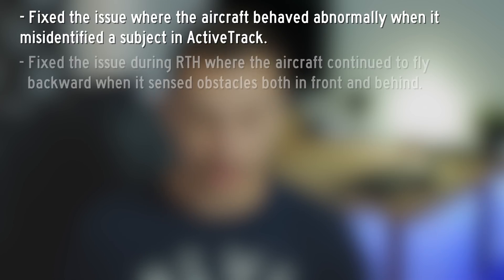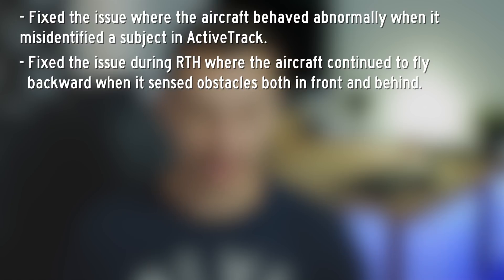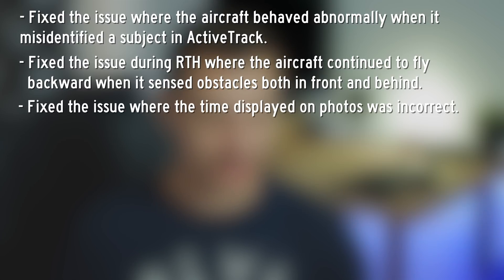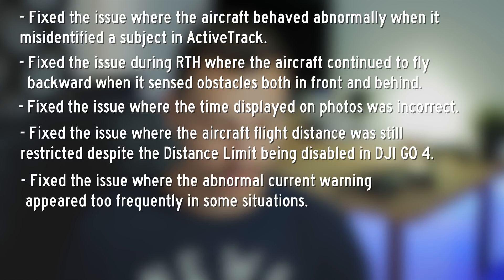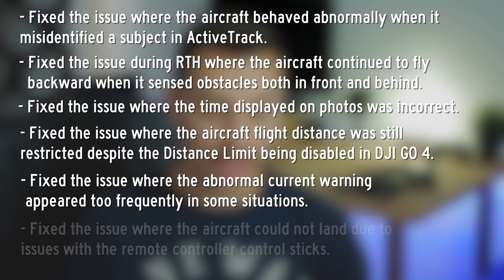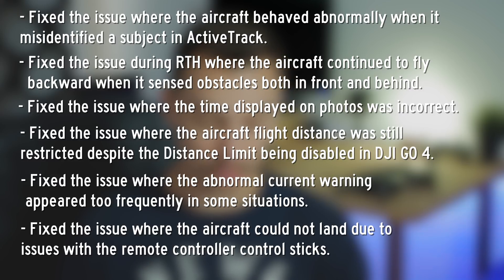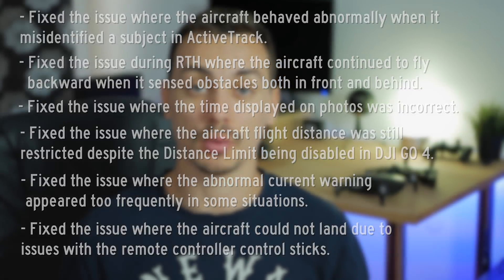The issue where the aircraft behaved abnormally when it misidentified a subject in Active Track is now fixed. The issue during Return to Home where the aircraft continued to fly backwards when it sensed obstacles both in front and behind has been fixed. The issue where the time displayed on photos was incorrect is also fixed. The issue where flight distance was still restricted despite the distance limit being disabled in DJI Go 4 is fixed. The abnormal current warning appearing too frequently is fixed, and the issue where the aircraft could not land due to problems with the remote controller sticks has also been fixed.